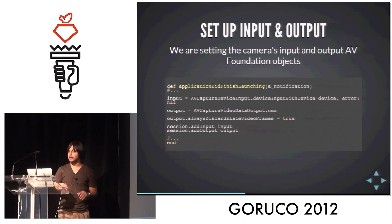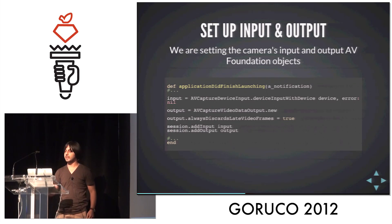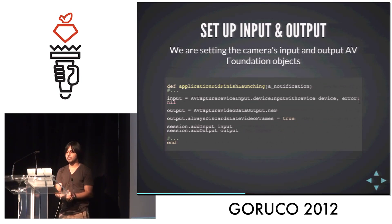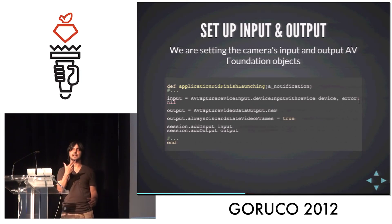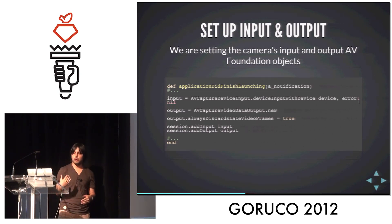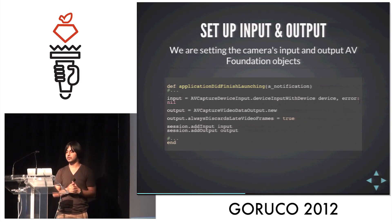Once we do that, we're going to set up an input device with device input. One thing to note: I'm setting the error object here using the 1.9 key-value notation for hashes, so that should be pretty straightforward. Then we also have to have an AV Capture output data object — that's not our preview that we're going to show, but we just need to get that data, so we're going to call that output. Then we add both our session input and output and set those just like so. You're going to have to get used to calling camel case methods on Ruby objects.